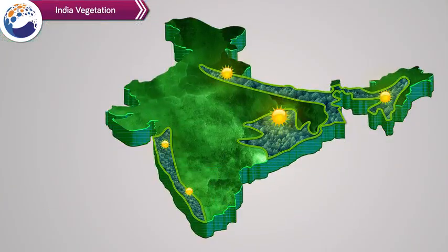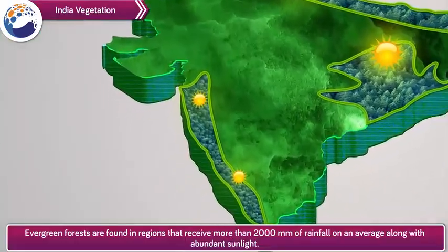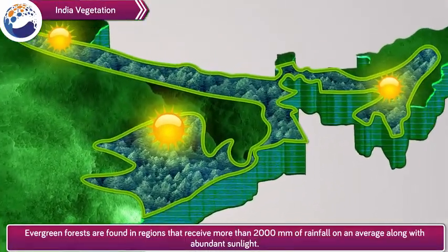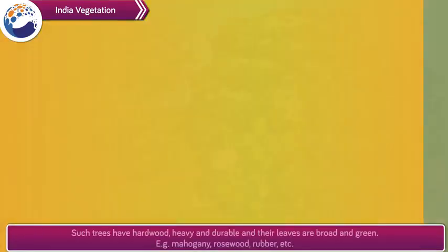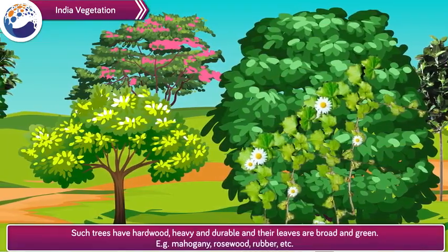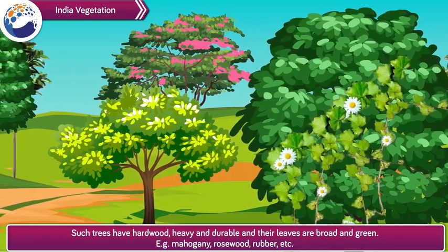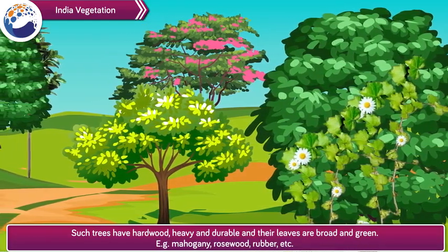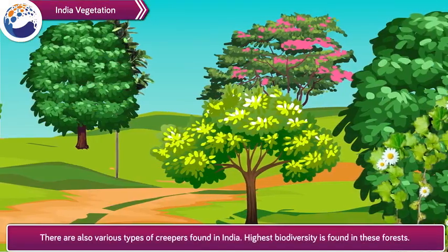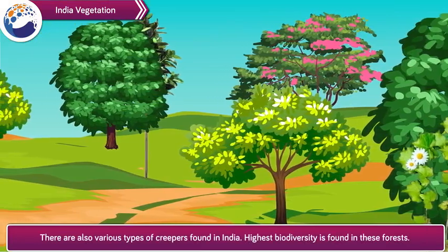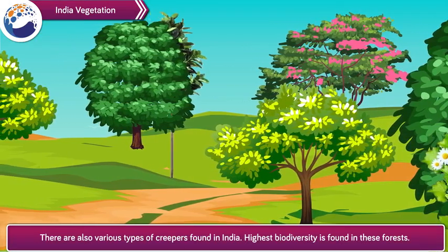Vegetation found in India: Evergreen forests are found in regions that receive more than 2000 mm of rainfall on average along with abundant sunlight. Such trees have hardwood, heavy and durable, and their leaves are broad and green. For example, mahogany, rosewood, rubber, etc. There are also various types of creepers found in India. Highest biodiversity is found in these forests.